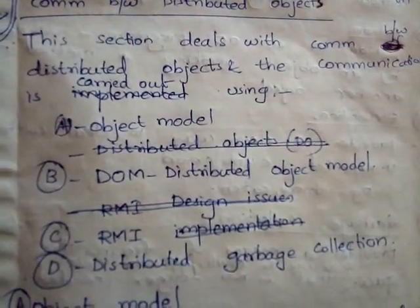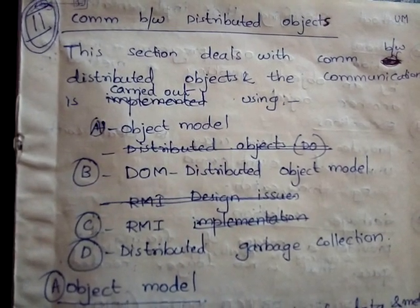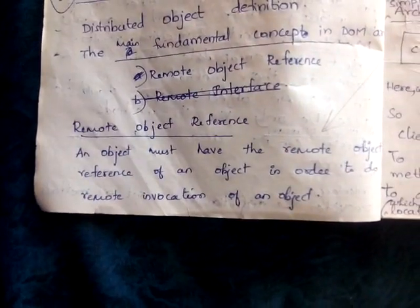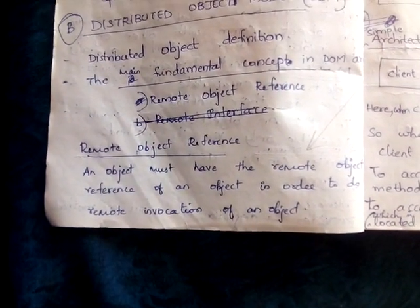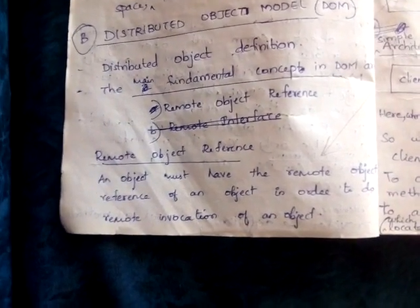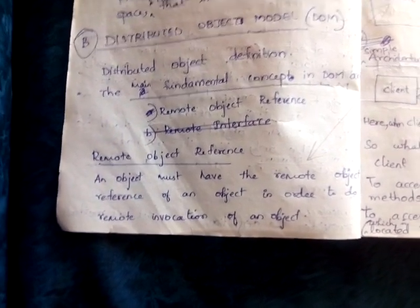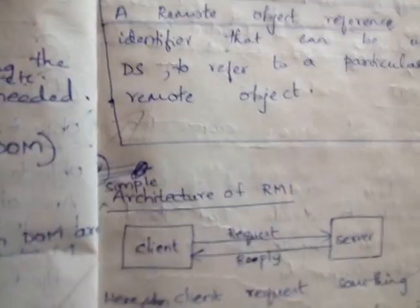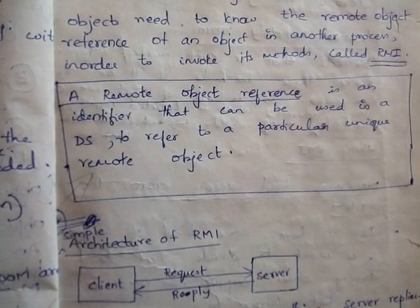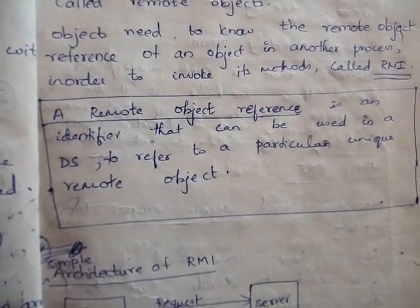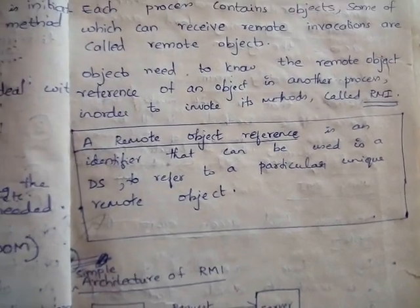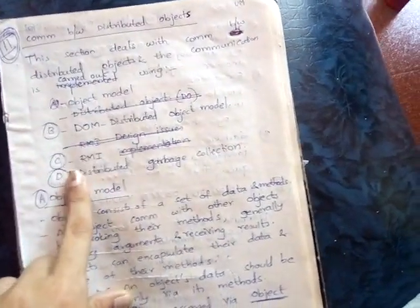Next we look at DOM — distributed object model. The main fundamental concepts in the distributed object model are remote object reference and remote interface. A remote object reference is an identifier that can be used in a distributed system to refer to a particular unique remote object. An object must have the remote object reference of another object in order to perform remote invocation on it.